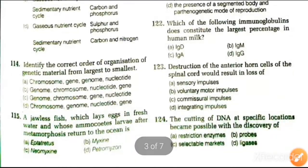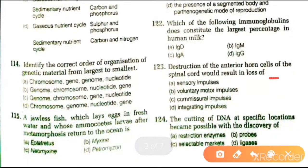Next question: the destruction of the anterior horn cells of the spinal cord would result in the loss of sensory impulses, voluntary motor impulses, commissural impulses, or integral impulses. The answer is voluntary motor impulses.